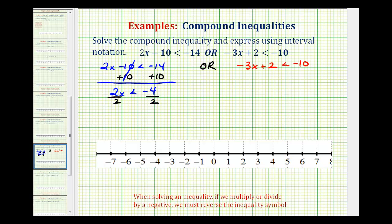and now we'll divide both sides by 2. And we're dividing by a positive, so we do not reverse the inequality. It's only when multiplying and dividing by a negative that we reverse the inequality symbol. Negative 4 divided by positive 2 is negative 2. So now we'll graph x is less than negative 2 on the number line.